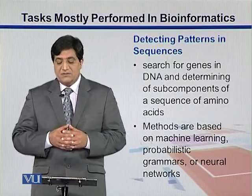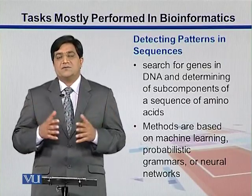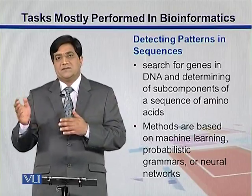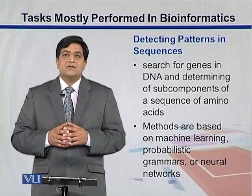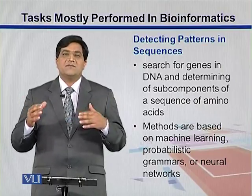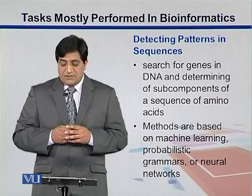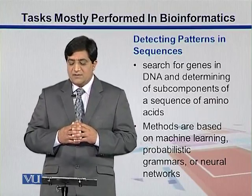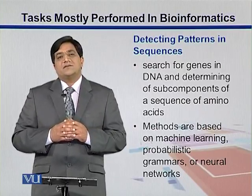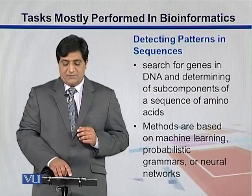We also do pattern searching in sequences. For example, if you want to find a gene within a sequence, there is a large, huge sequence of DNA — nucleotides running together: As, Cs, Ts, and Gs — and we want to find out where the genes are present. Nucleotides form specific patterns in the neighborhoods where genes are present. To search for genes in DNA and determine the subcomponents of amino acids, we do pattern finding. Mostly, pattern finding methods are based on machine learning — probabilistic models and neural networks.